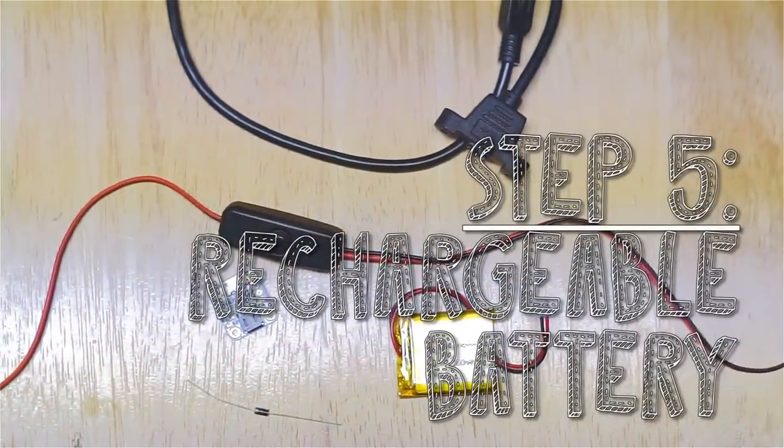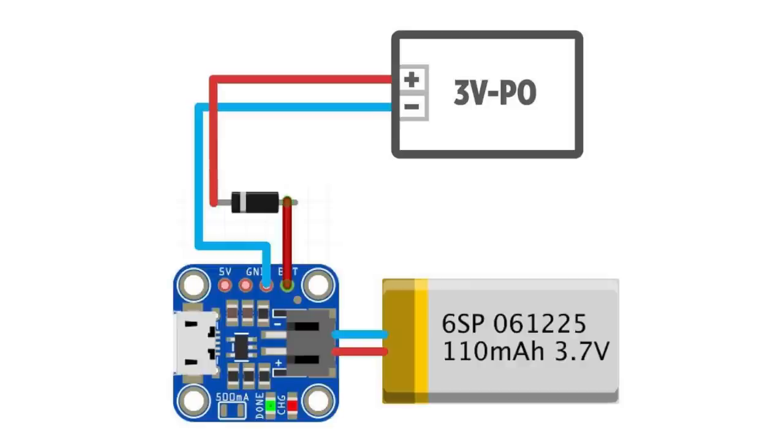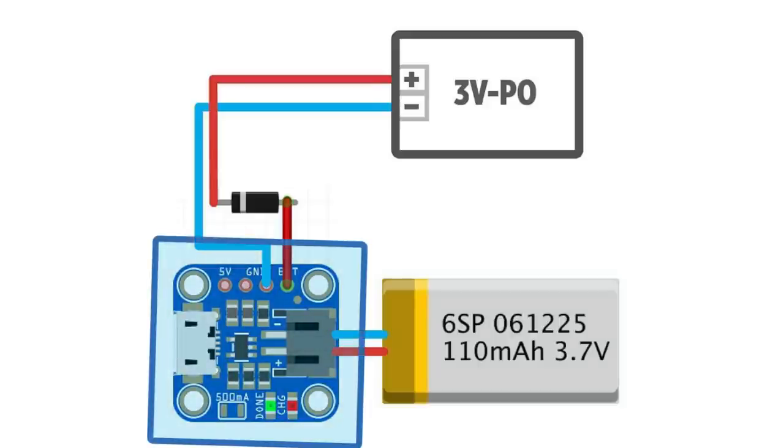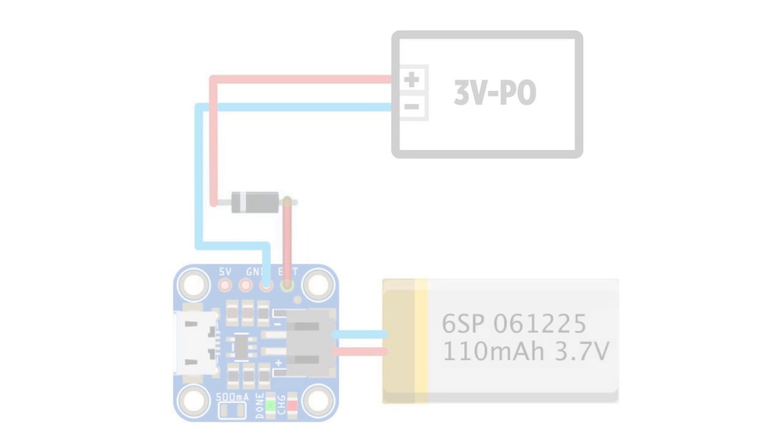Now it's time to put together our rechargeable battery setup. Thanks to our friends over at Adafruit, we were able to come up with the following schematic for the battery. This consists of a 3.7 volt, 500 milliamp lithium-ion battery attached to a micro-lipo charger board, then a diode to cut the voltage between the board and the pocket operator.